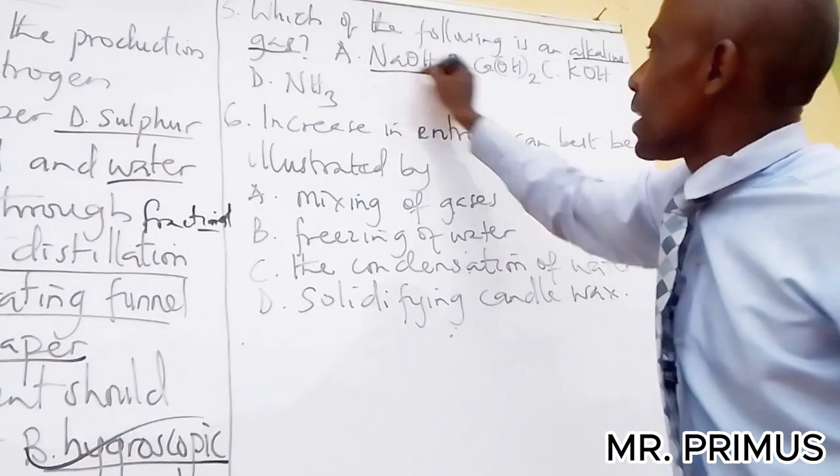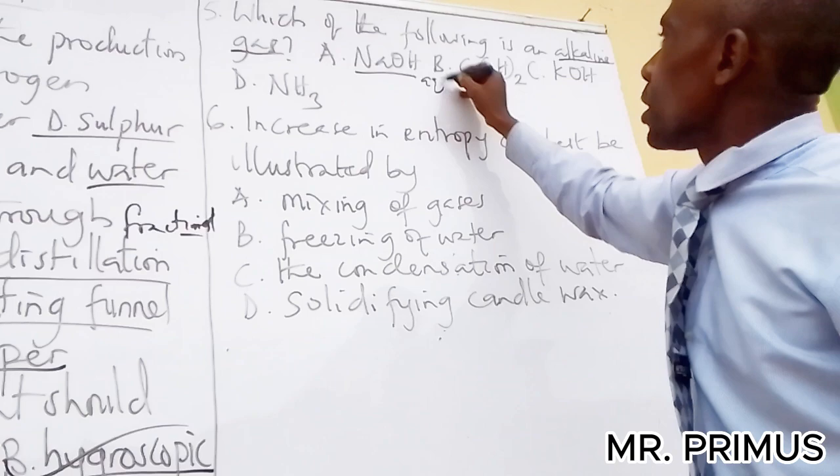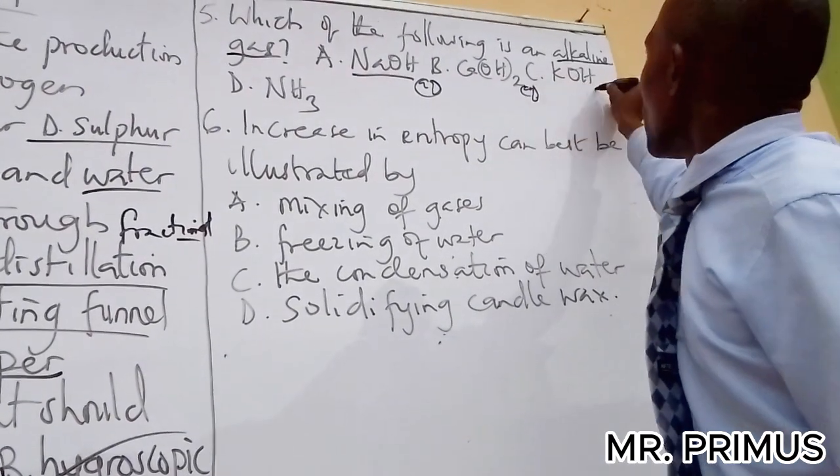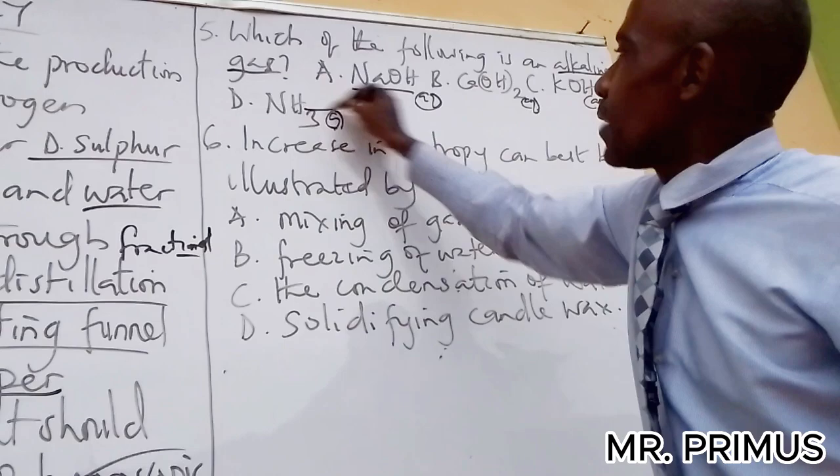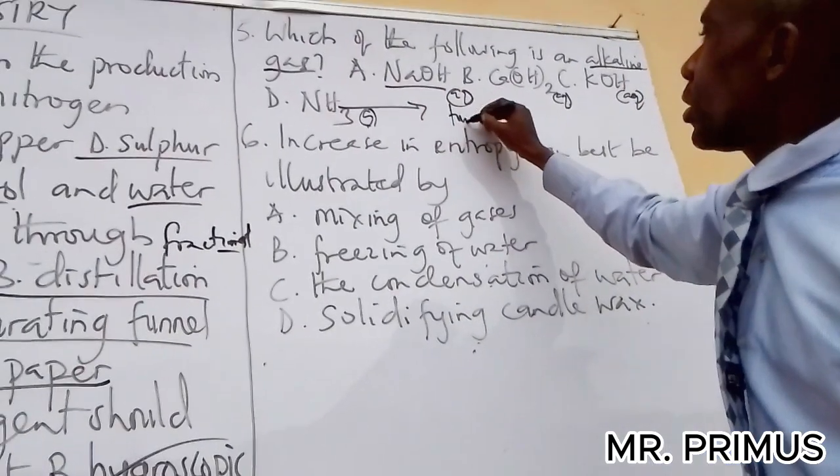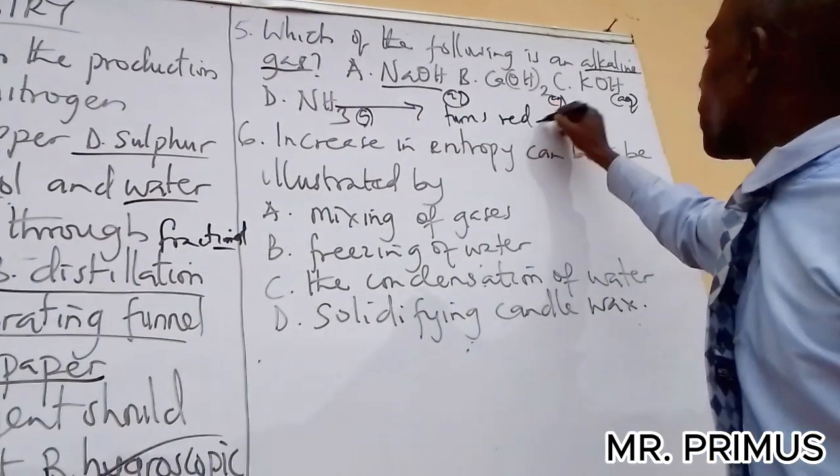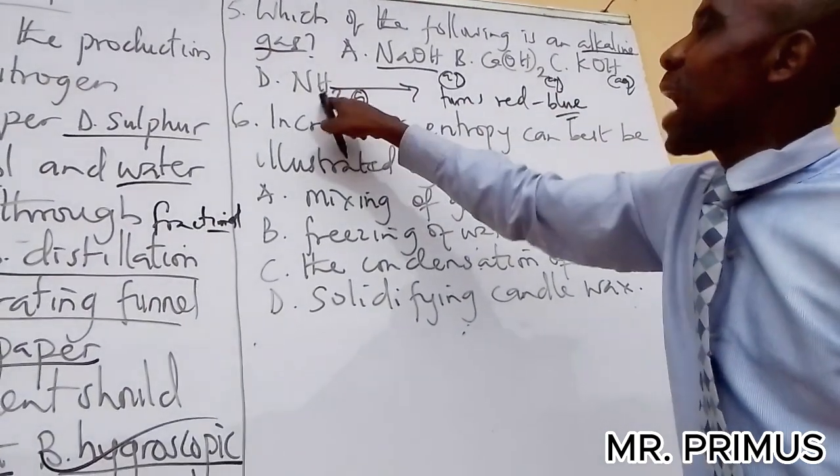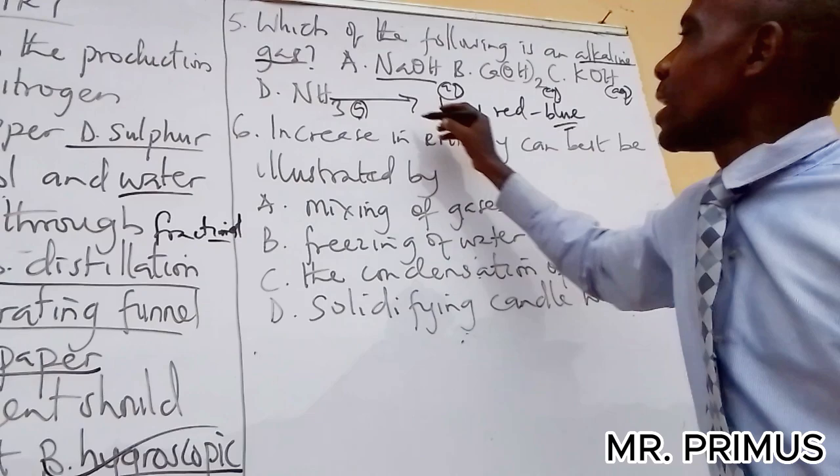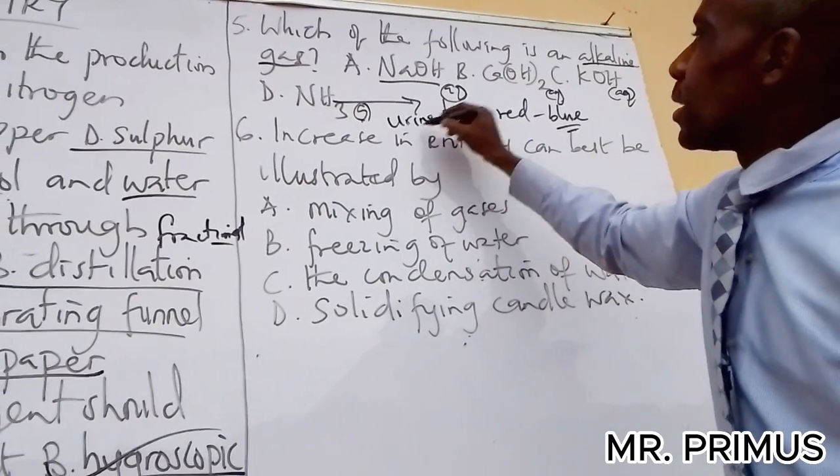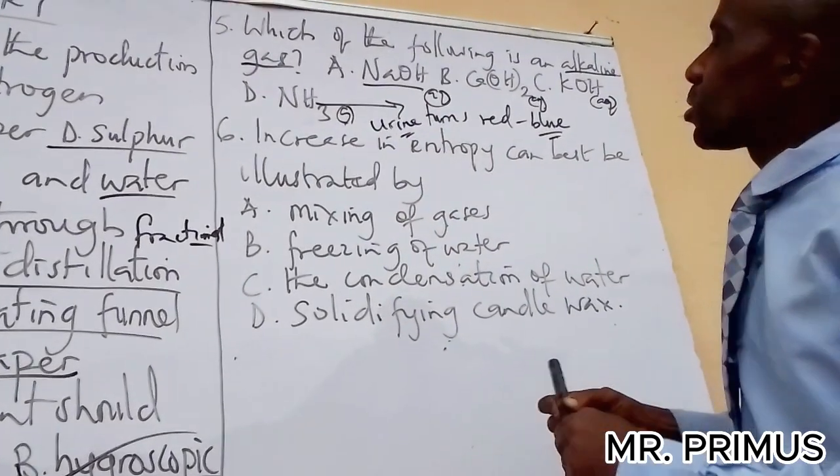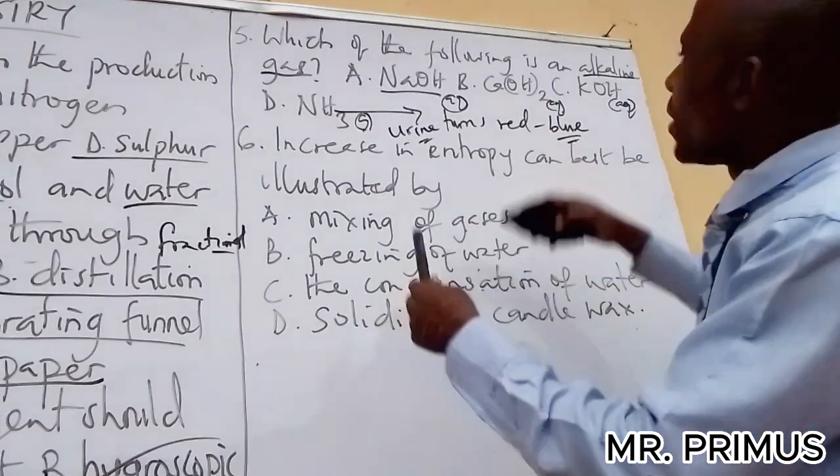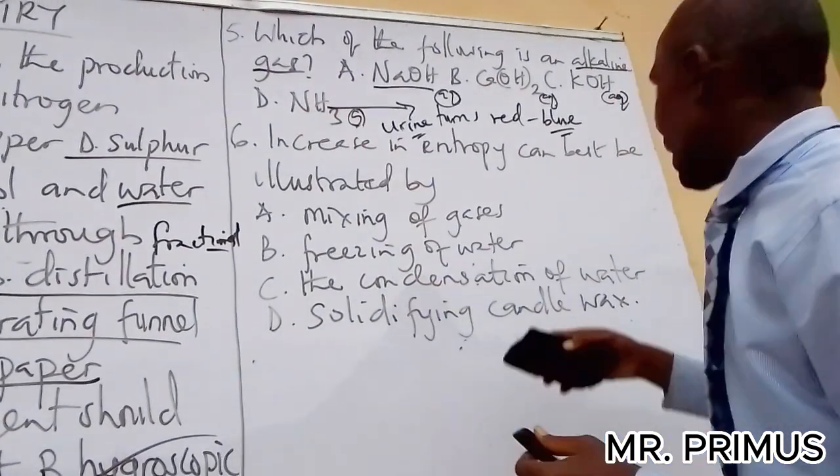Which of the following is an alkaline gas? This is an alkaline gas. It turns red litmus paper blue, and this has color, it smells like urine - ammonia. It smells like urine. So for now this is the alkaline gas we have.